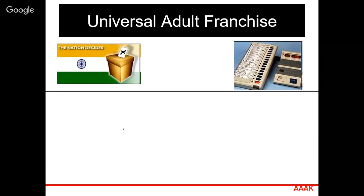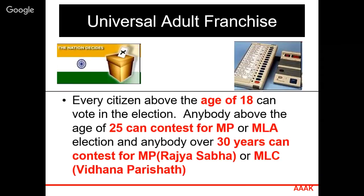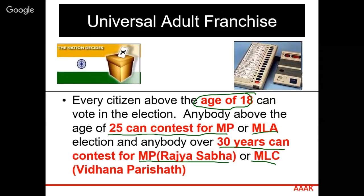Universal adult franchise means anybody above the age of 18 years has the right to vote and a say in selecting MPs, MLAs and other elected representatives. Anybody above the age of 25 years can contest for MP or MLA, and anybody over the age of 30 years can contest for Rajya Sabha MP or MLC of Vidhan Parishad.